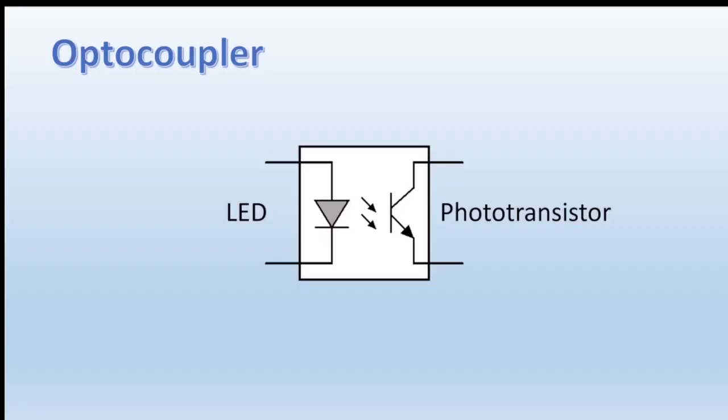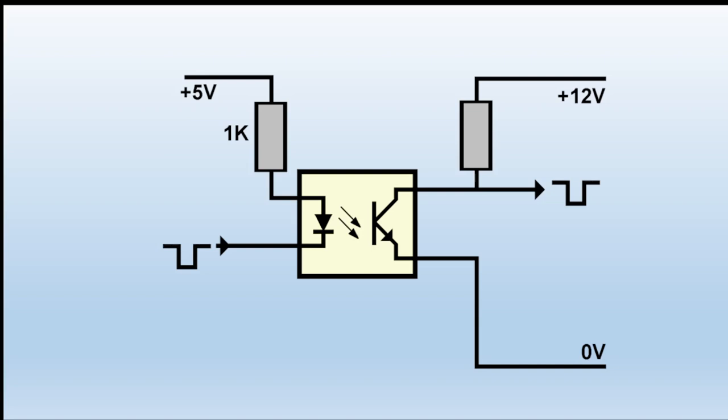So how do we connect up the optocoupler in practice? Well here we are. The LED part requires its usual dropper and we have a load resistor on the output. So if this pulse goes low the LED illuminates and this point here will also drop low.